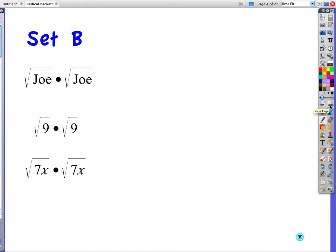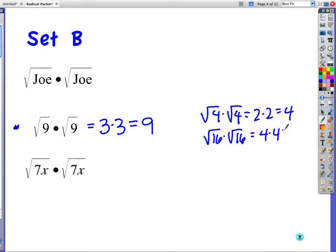Set B. Square root of Joe times the square root of Joe. I'm actually going to go down to this one first. If you work this out, square root of 9 times square root of 9, a lot of you will do this: 3 times 3, and then you're going to get 9. But let me show you something. Square root of 4 times the square root of 4 is 2 times 2, which is 4. Let's try square root of 16 times square root of 16. 4 times 4. 16. What do you see happening? Square root of Joe times the square root of Joe, Joe. Square root of 7x times the square root of 7x, 7x.